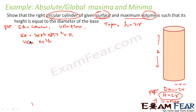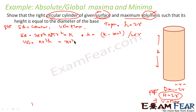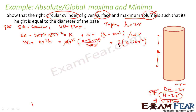Volume V = πr²h. I have to find the value of r for which volume is maximum. First, I convert the equation into r only. From the surface area formula (k = 2πr² + 2πrh), I get h = (k - 2πr²) / (2πr). Substituting into volume: V = πr² · (k - 2πr²)/(2πr) = (r/2)(k - 2πr²). This is volume in terms of r.